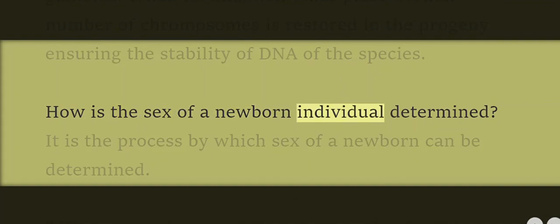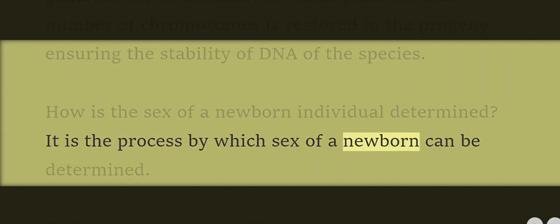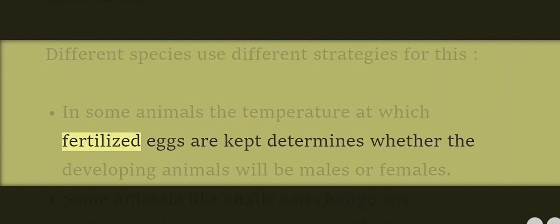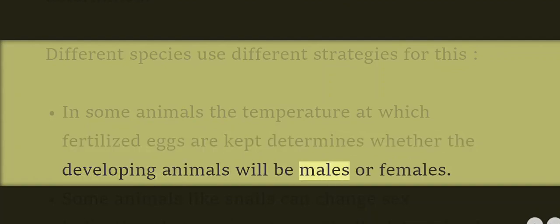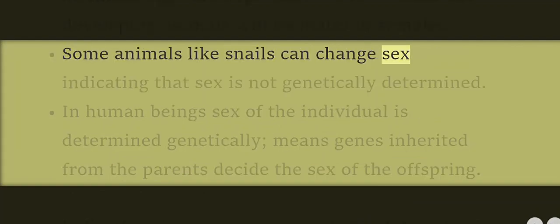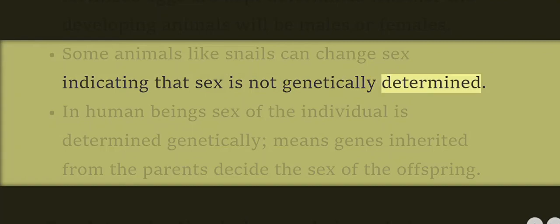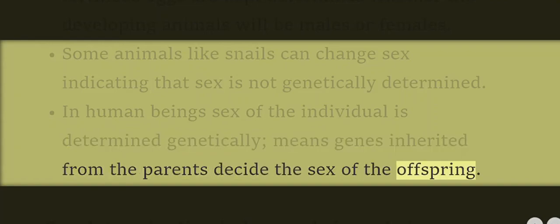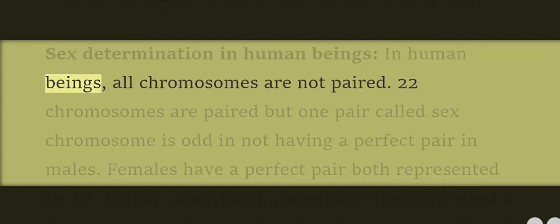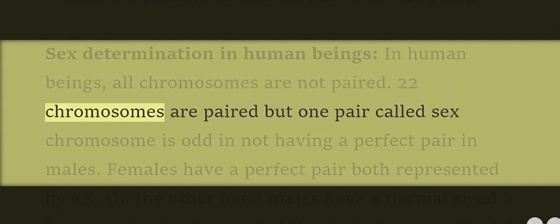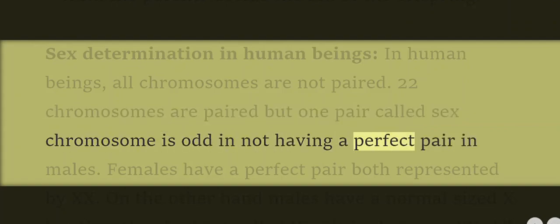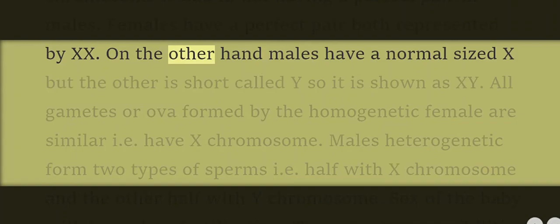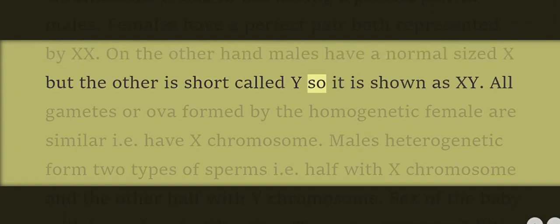How is the sex of a newborn individual determined? It is the process by which the sex of a newborn can be determined. Different species use different strategies — in some animals, the temperature at which fertilized eggs are kept determines whether the developing animals will be male or female. Some animals like snails can change sex, indicating that sex is not genetically determined. In human beings, sex is determined genetically — genes inherited from parents decide the sex of the offspring. In human beings, 22 chromosome pairs are autosomes, but one pair called sex chromosomes is not a perfect pair in males. Females have a perfect pair represented as XX, while males have a normal X and a shorter Y, shown as XY.